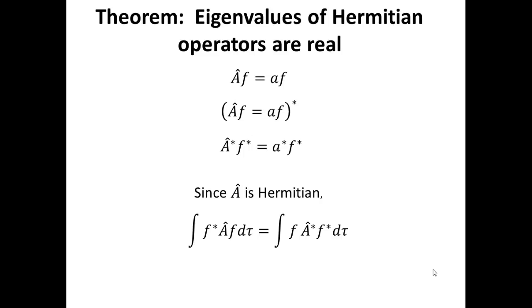And that is namely that Hermitian operators satisfy this particular relationship. When a operator acts on f and we multiply it by the complex conjugate of f and we integrate over all space, that is equal to having the complex conjugate of the a operator acting on the complex conjugate of the function f, multiplying that by f and integrating over all space.